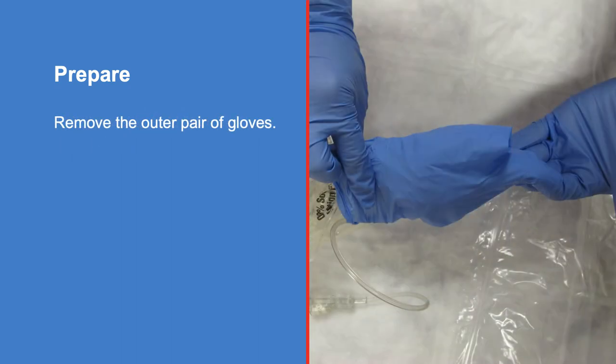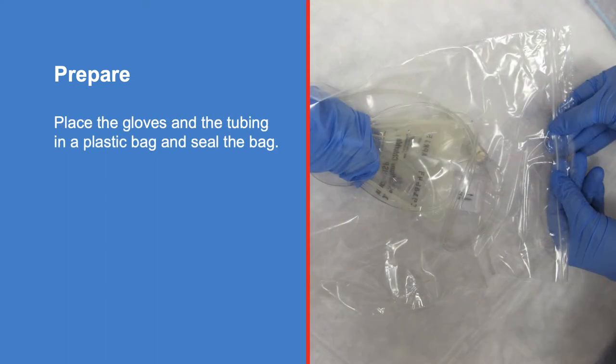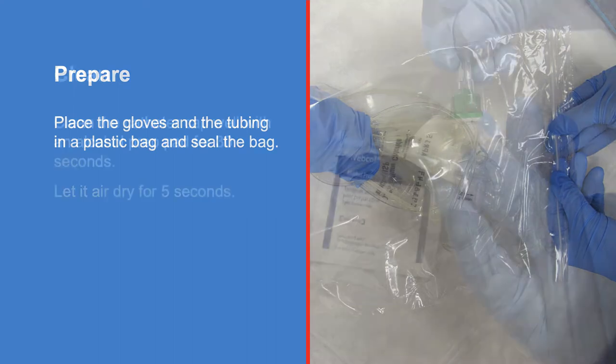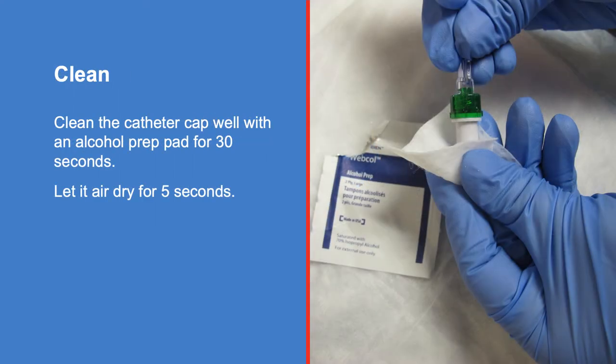Remove the outer pair of gloves. Place the gloves and the tubing in a plastic bag and seal the bag. Clean the catheter cap well with an alcohol prep pad for 30 seconds. Let it air dry for 5 seconds.